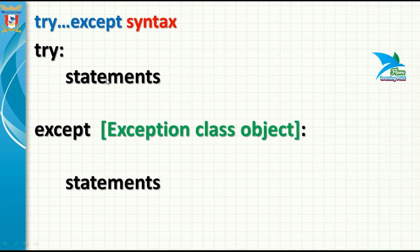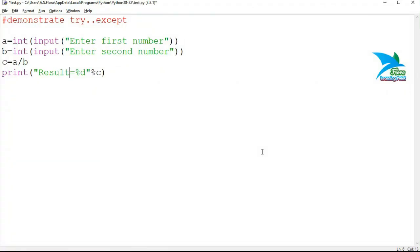The syntax of try-except blocks: write the try keyword, then a colon, then an indented block where you write statements where exceptions are expected to occur. After the try block, write the except block with a colon, and inside it write statements to perform the alternative task. You can also use an object of an exception class with except, but we'll discuss that in the next session. Today we'll use try and except without any exception class object.